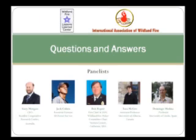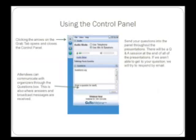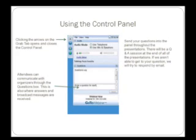For the webinar control panel for attendees, the GoToWebinar attendee interface is made up of two parts. The viewer window is where attendees see the presenter screen, and it can be resized by clicking and dragging on the lower right-hand corner. The control panel is where attendees can interact with the organizers and presenters. By clicking the arrows on the grab tab, it opens and closes the control panel. The audio pane provides audio information — you can use your computer with mic and speakers or call in by phone. Remember to mute so we don't have feedback.